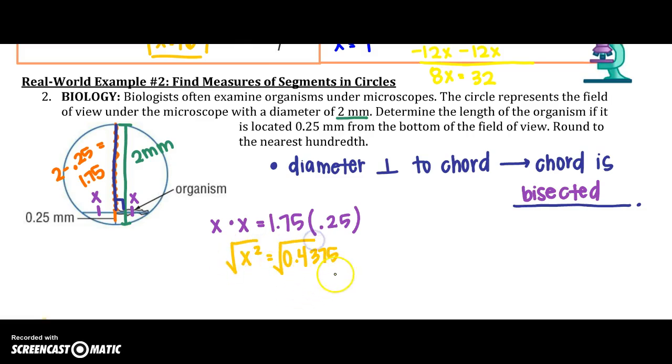So, I'm going to say X squared is going to equal 0.4375. To get rid of that squared, I'm going to take the square root. So, my organism is going to be about 66 millimeters. So, the big thing is representing, if you don't have that variable, you can represent those two because of the diameter.